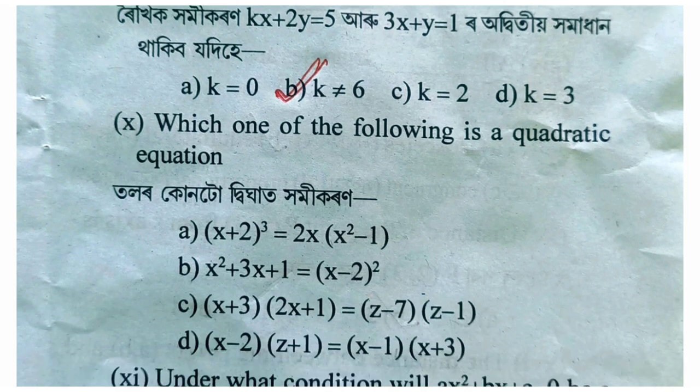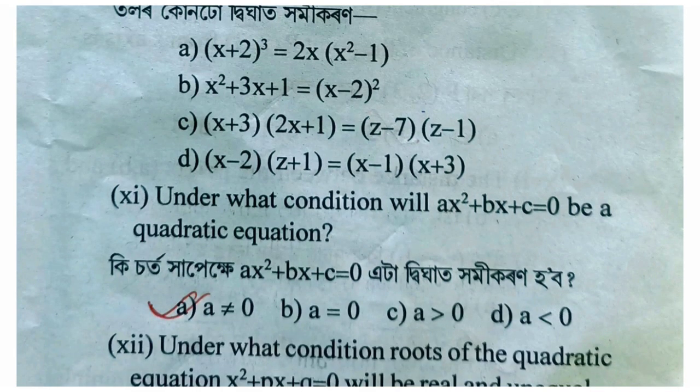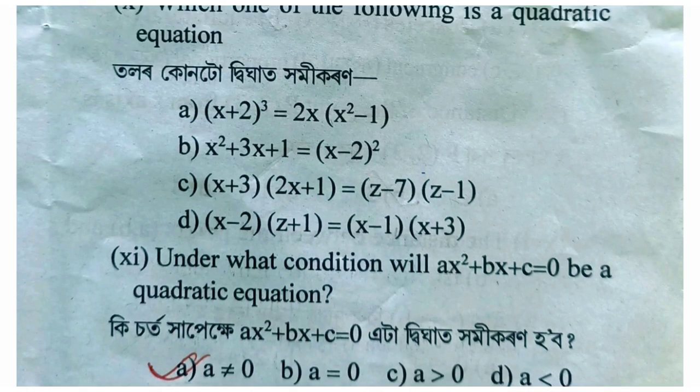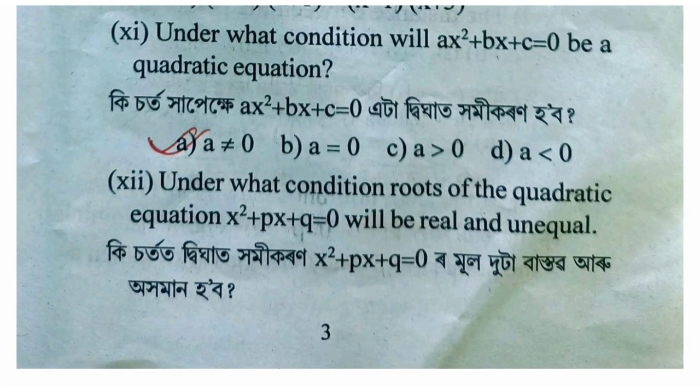Which of the following is a quadratic equation? Under what condition will ax squared plus bx plus c equal 0 be a quadratic equation? The option is: a does not equal 0.